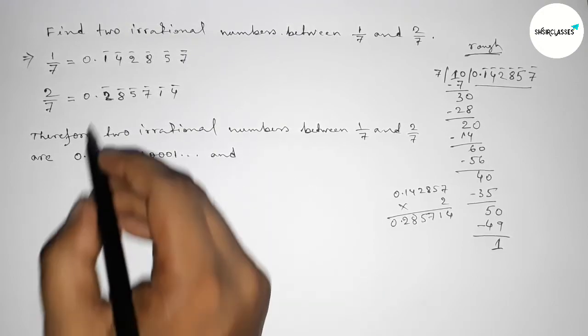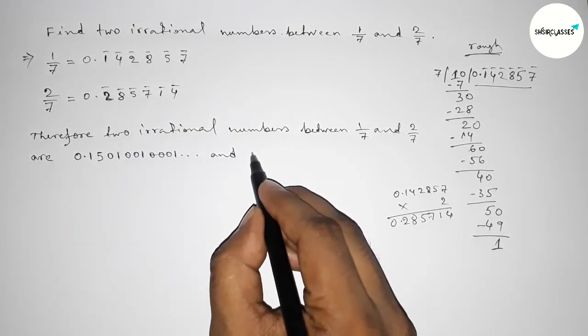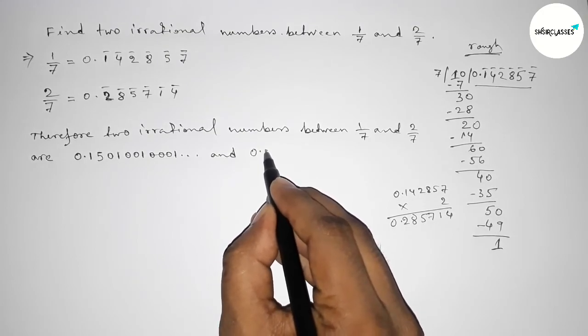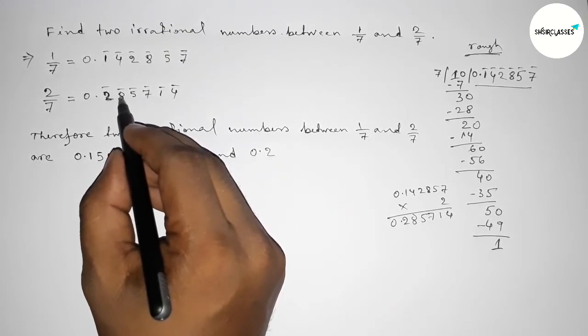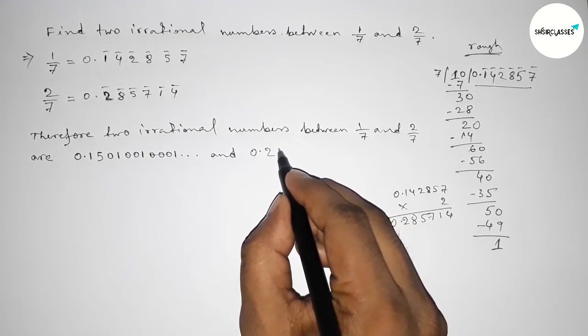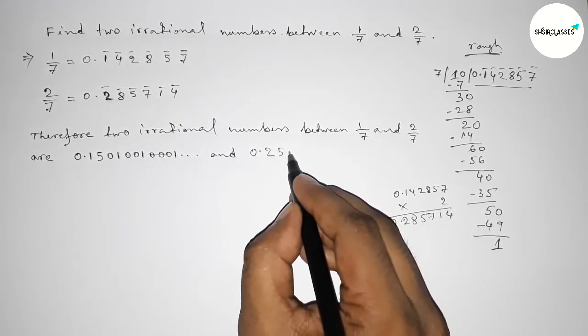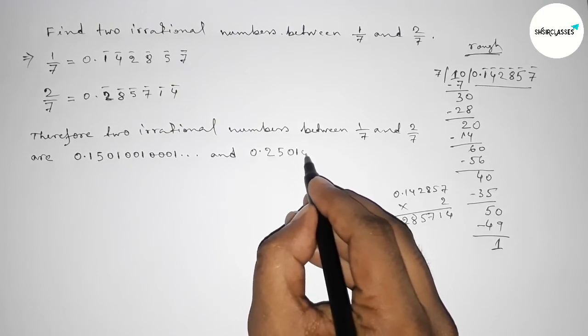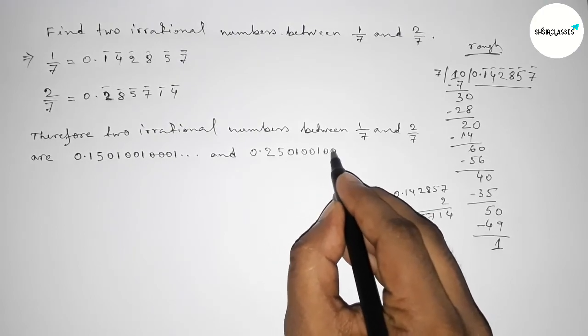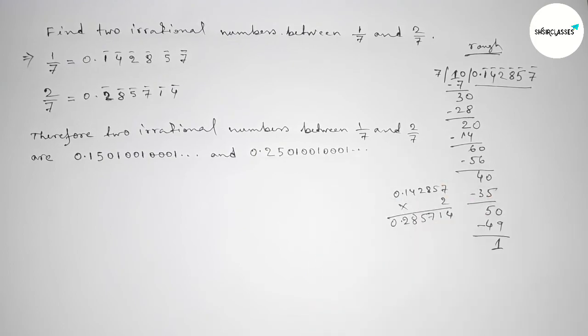And the second one is now taking 0.2 and taking less than this, so 8, so less than 8, so 7 or 5. So this is 0.25, taking 01, 2, 01, 3, 3, 3, 001. So by this way you can write two irrational numbers. So that's all.